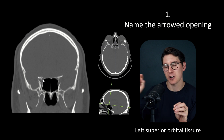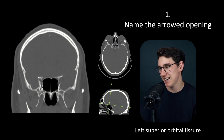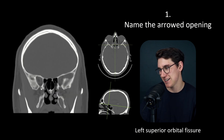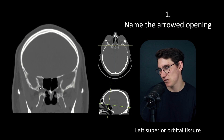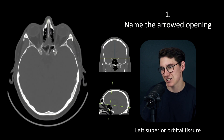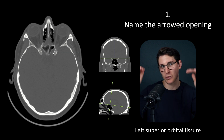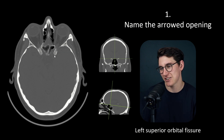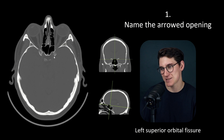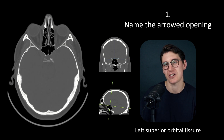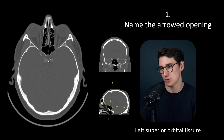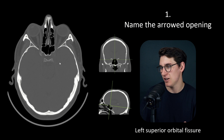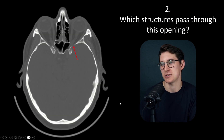The optic canal has the optic nerve and the ophthalmic artery running through it. Inferior to that, we can see the inferior orbital fissure, which is much below those anterior clinoid processes. The anterior clinoid processes face posteriorly towards the posterior clinoid processes, and there's a dural wall making up the lateral walls of the pituitary fossa. So that's the answer to question one: the left superior orbital fissure.